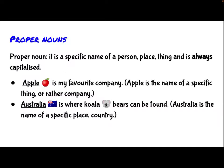There are the proper and common nouns. A proper noun is a specific name of a person, place, or thing, and is always capitalized. For example, Apple is my favourite company. Apple is the name of a specific thing, or rather, company. The second example is, Australia is where collar bears can be found. Australia is the name of a specific place, country. The proper nouns are underlined, as shown in the slide here, which is Apple and Australia.